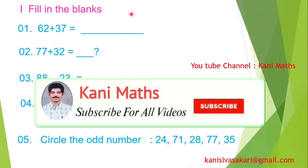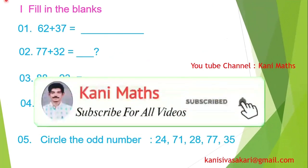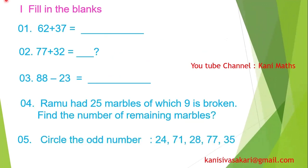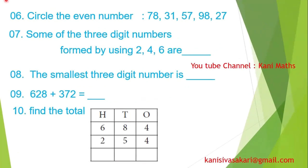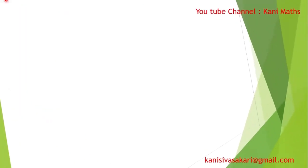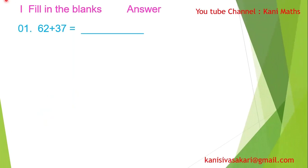Students, answer the following questions. First question: 62 plus 37. 7 plus 2 is 9, 6 plus 3 is equal to 9. The answer is 99.